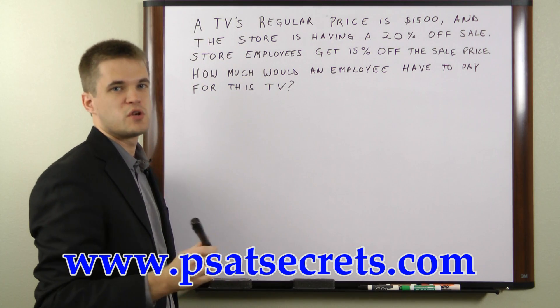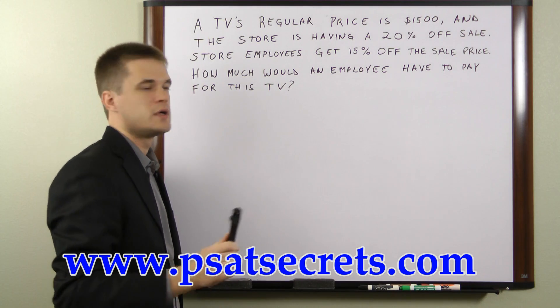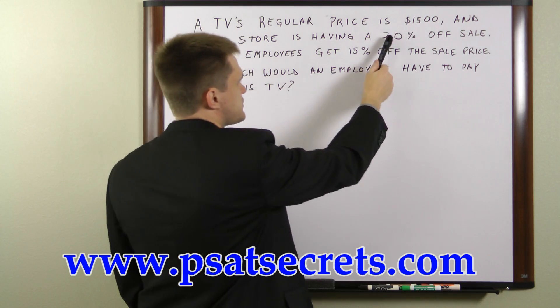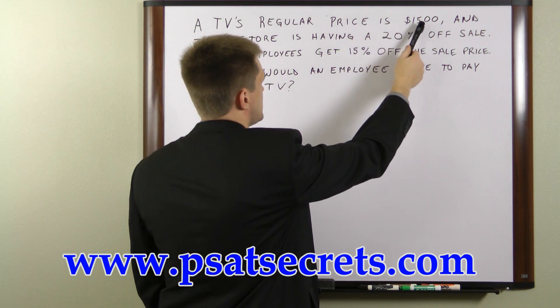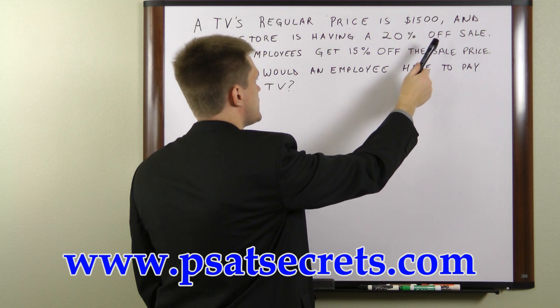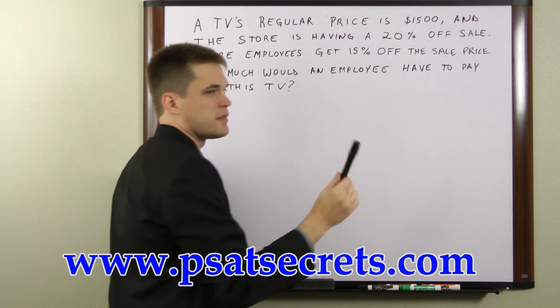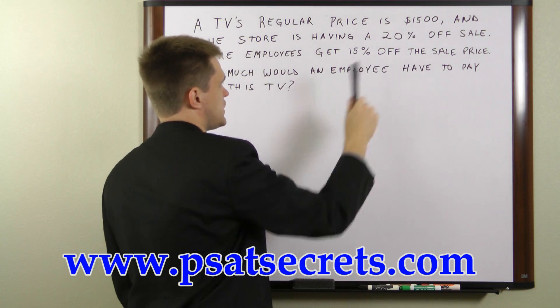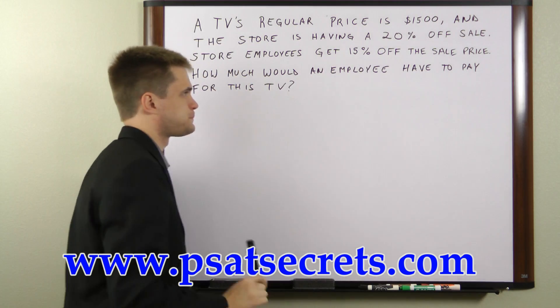What you have to do is take 20% off the regular price to get the sale price, and then take 15% off the sale price.